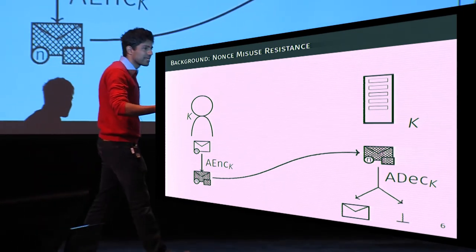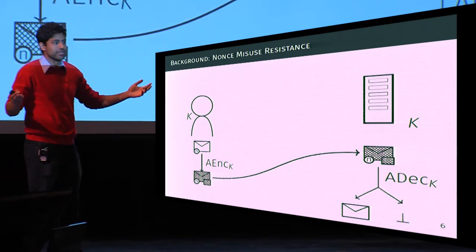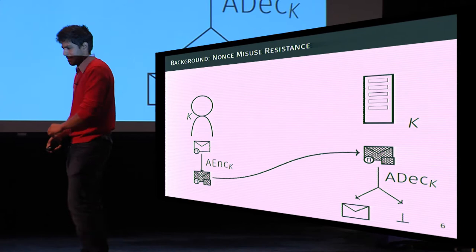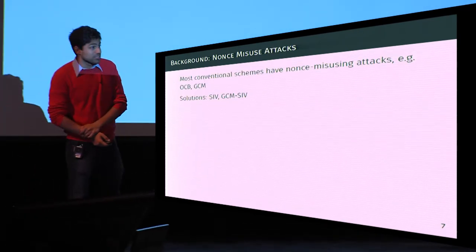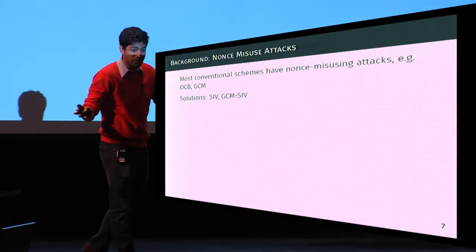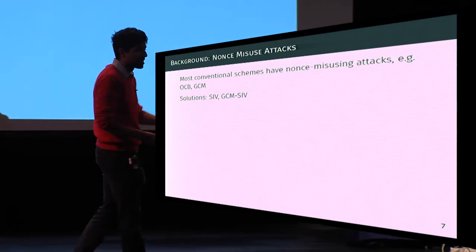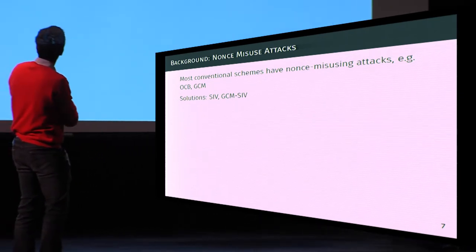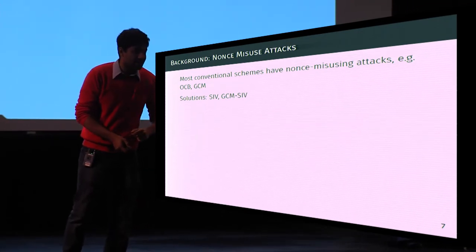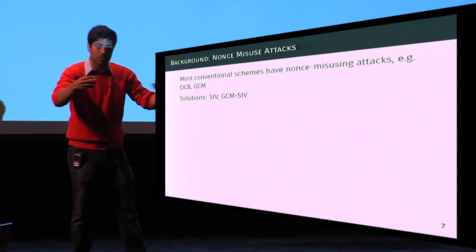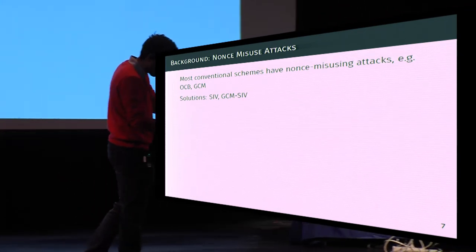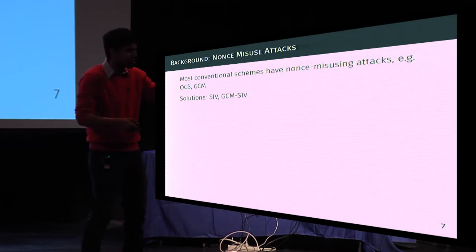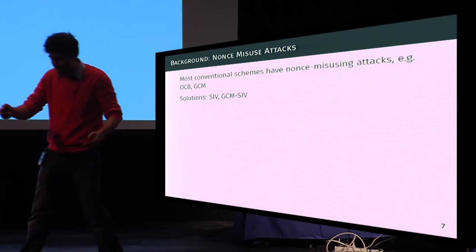In nonce-misuse settings, the nonce is no longer unique — it is repeated due to some error. The question is: what security can you still achieve? Most conventional schemes lose all security when nonces are misused. OCB and GCM suffer both confidentiality and authenticity breaks. As a solution, Rogaway and Shrimpton introduced SIV, and GCM-SIV followed — these provide best-possible security under nonce misuse.